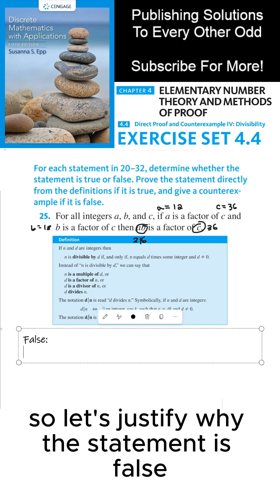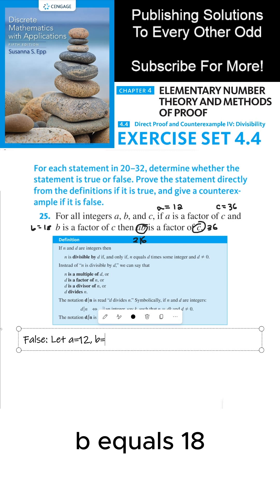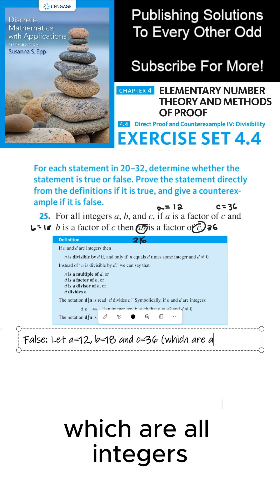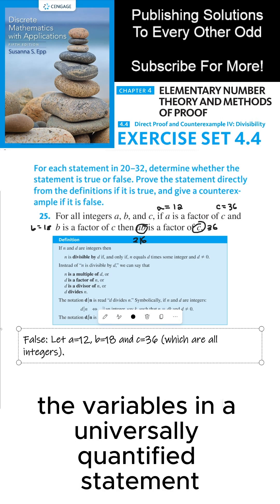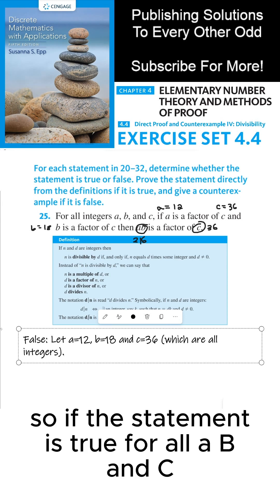So let's justify why the statement is false. Let a equals 12, b equals 18, and c equals 36, which are all integers. That's important because we're allowed to instantiate the variables in a universally quantified statement. So if the statement is true for all a, b, and c,